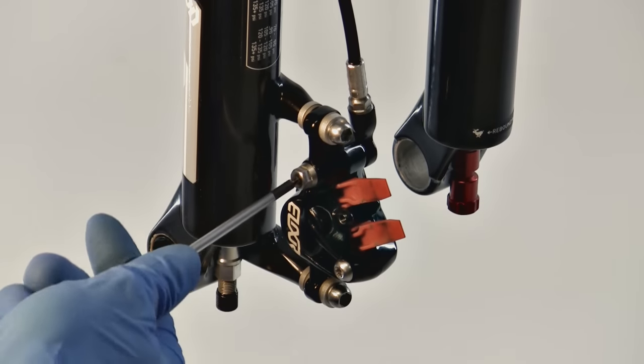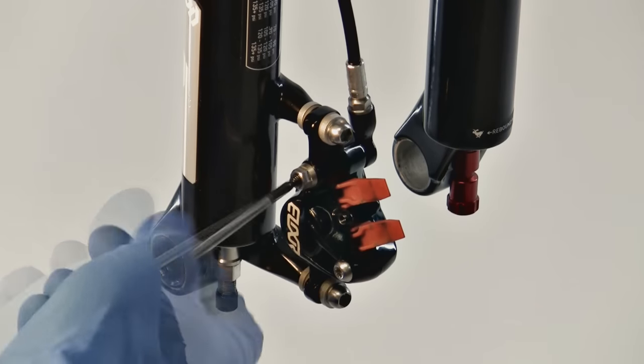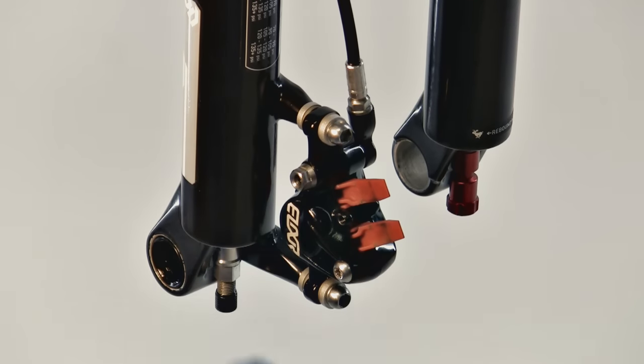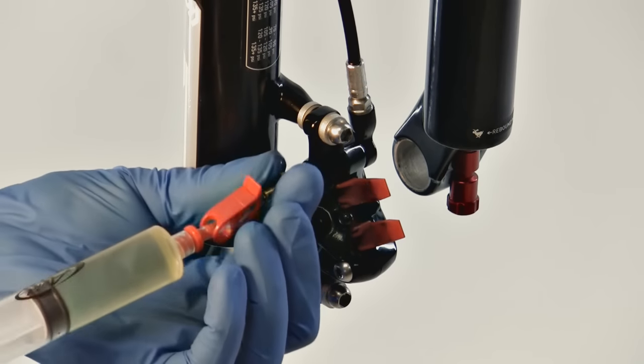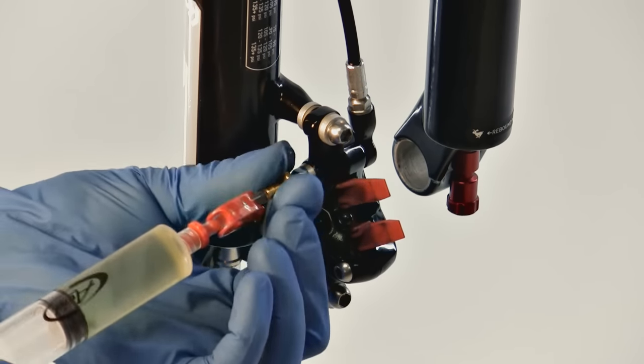Use a T10 Torx to remove the caliper bleed port screw from the banjo bolt or caliper body. Make sure the fluid in the half full syringe is pushed all the way to the tip. Then thread it into the caliper bleed port.